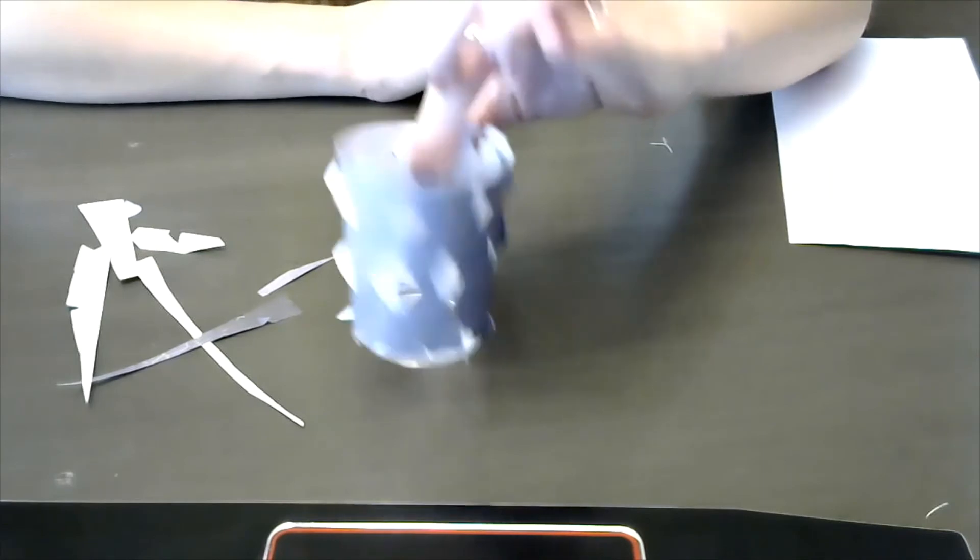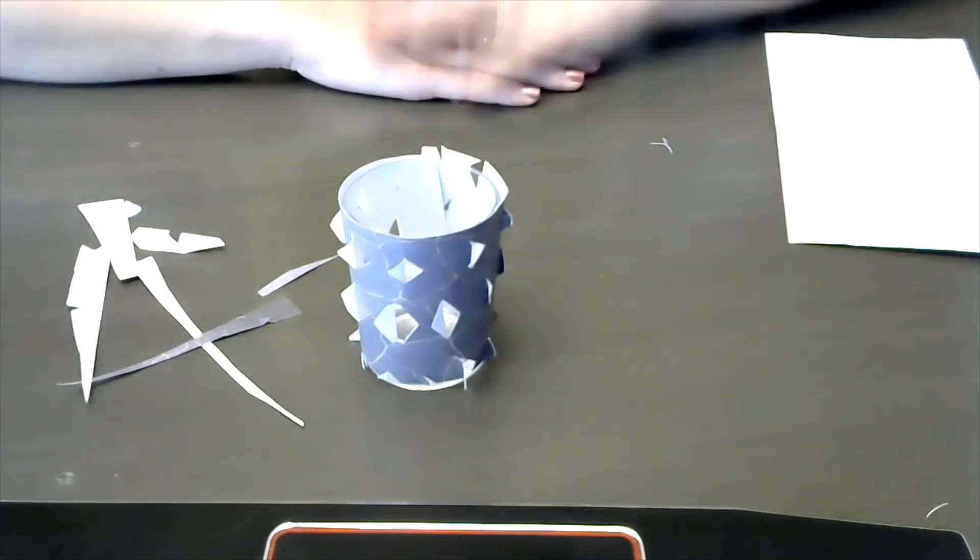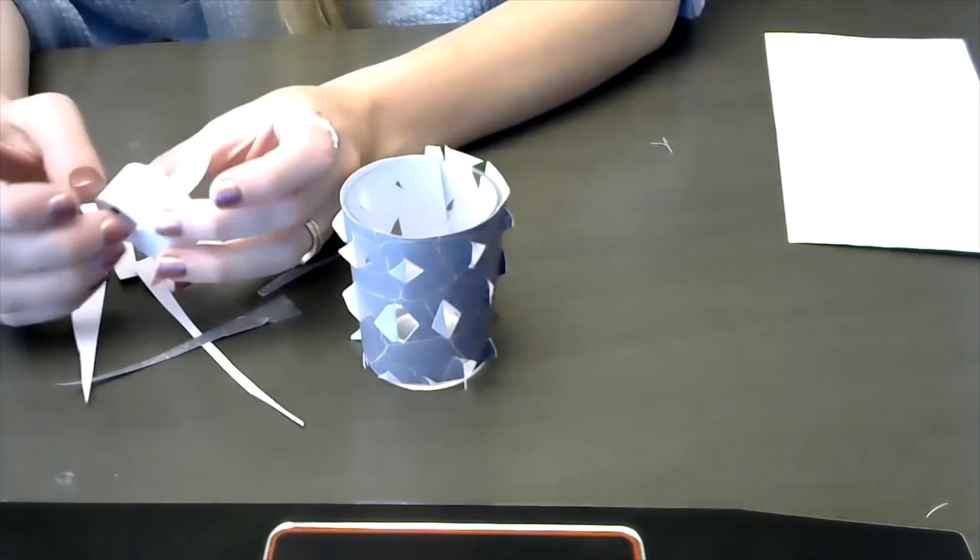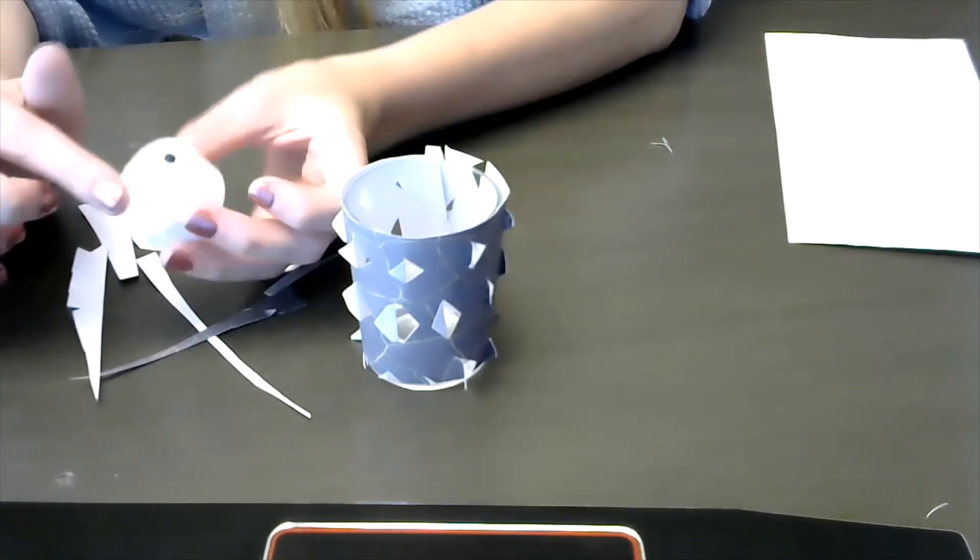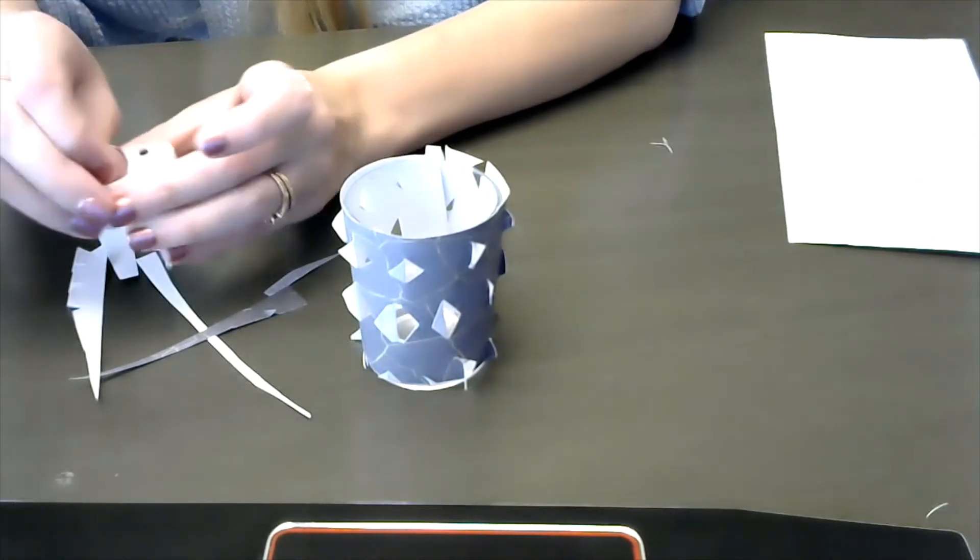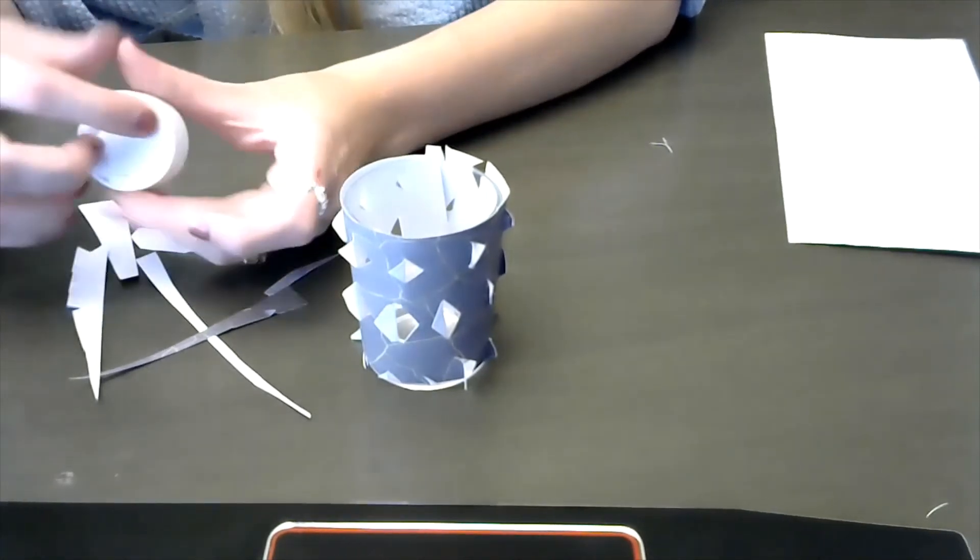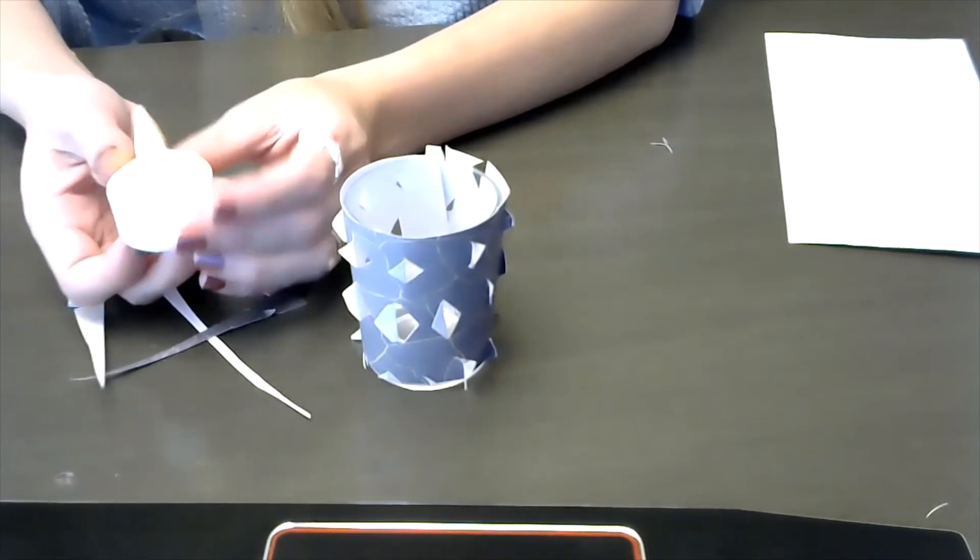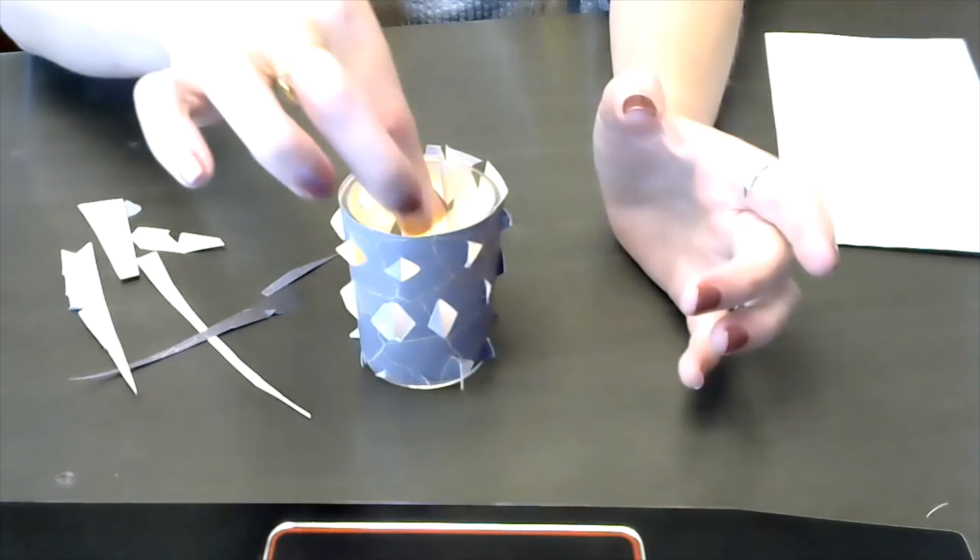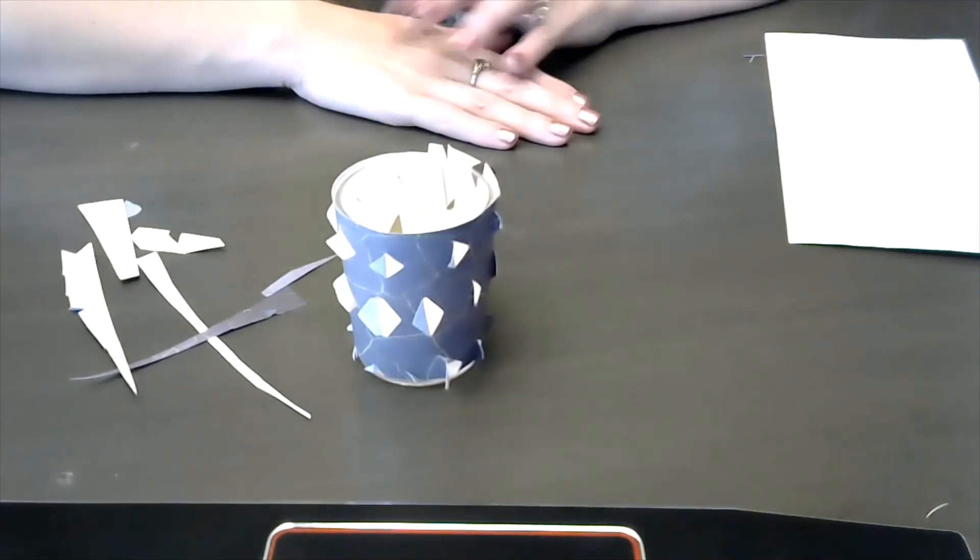So after we let it dry, this is what it should look like. And then you take your candle. There's this little red thing right here that doesn't let it turn on while it's in. So you just pull that out. And then it should turn on. You can't really see the light. And you just put it in. And I'm going to go turn off the light so we can see what it looks like.